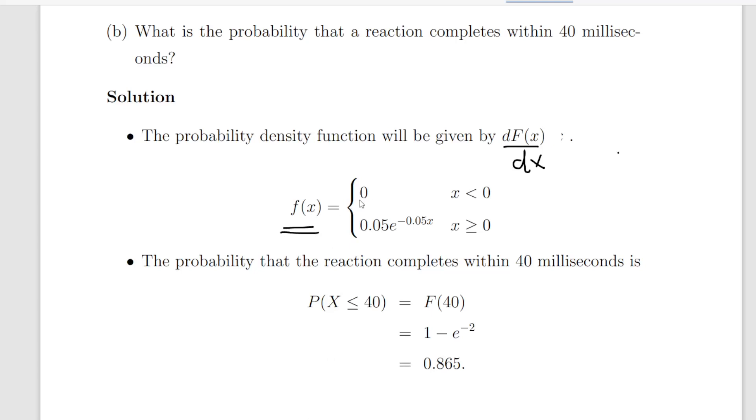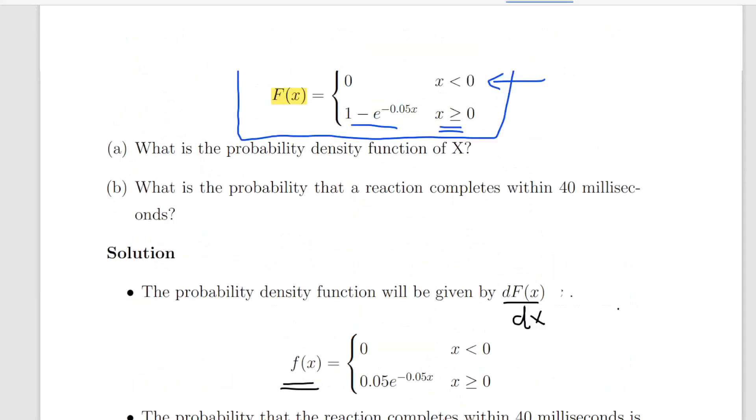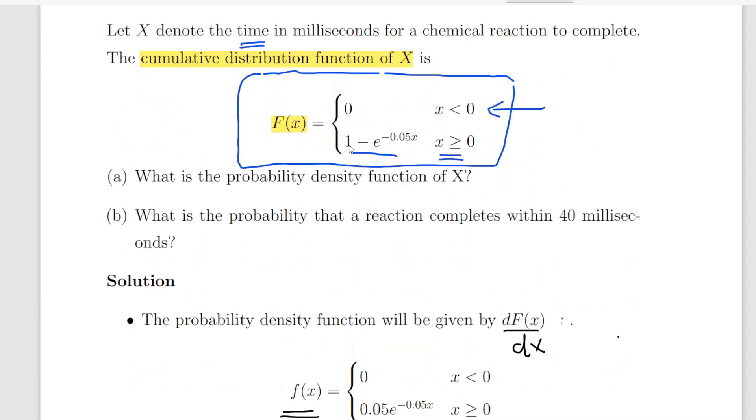Now we notice the same construction where 0 where x is less than or equal to 0 and here the derivative where x is greater than or equal to 0 we get the derivative of this expression above. The derivative of 1 with respect to x is 0 so don't have to worry about that and the derivative of e to the minus 0.05x is minus 0.05 times e to the minus 0.05x.